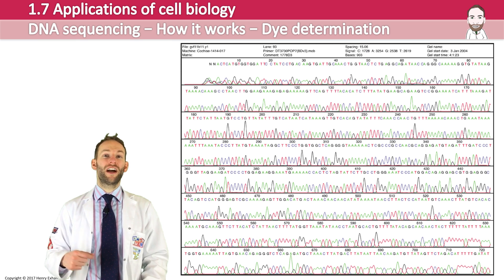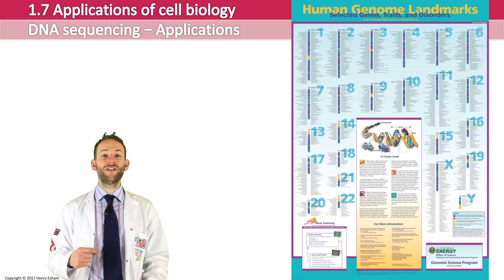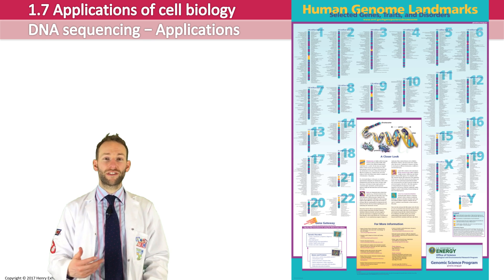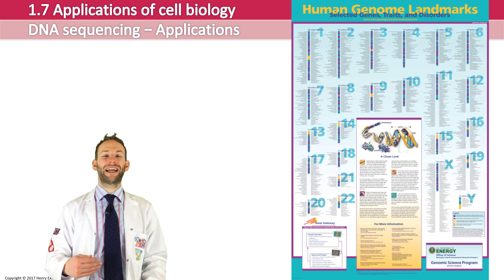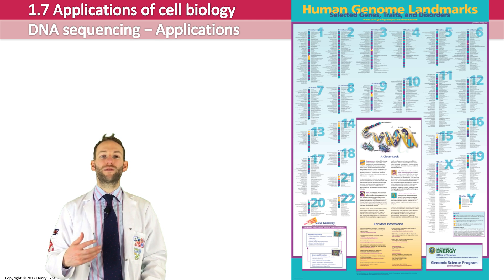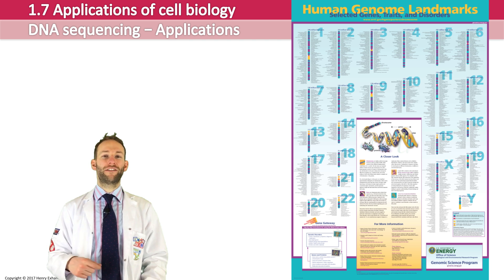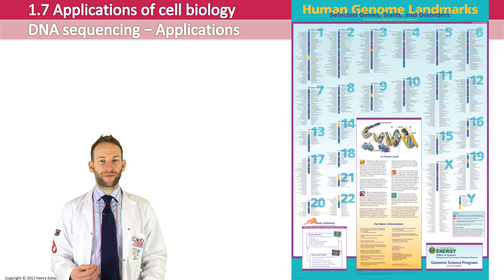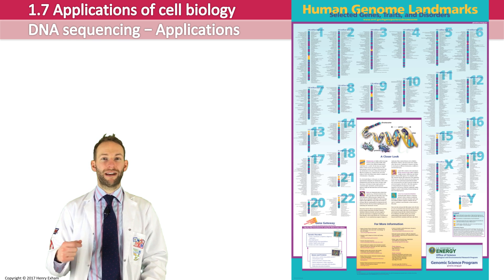When Sanger invented DNA sequencing, nobody thought it would be possible to sequence the entire human genome. But after a huge international effort, the entire human genome was fully published in 2003. It took hundreds of scientists over 10 years, and they found it was over three billion base pairs long. Sanger's process would have taken weeks to read only a small sample of code, but technology improvements made the project much quicker.